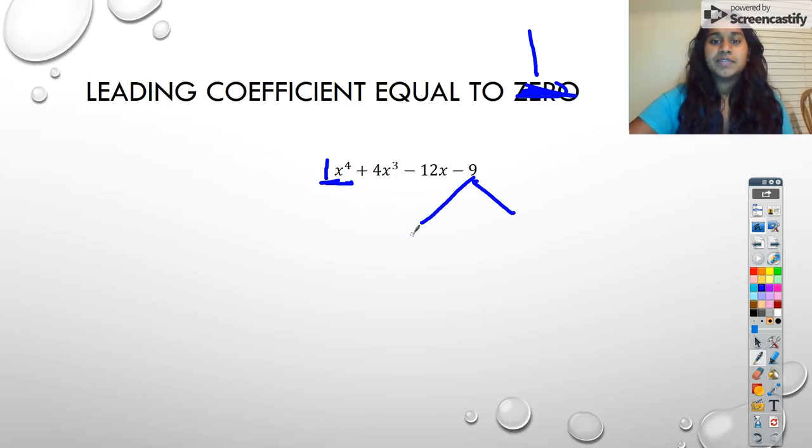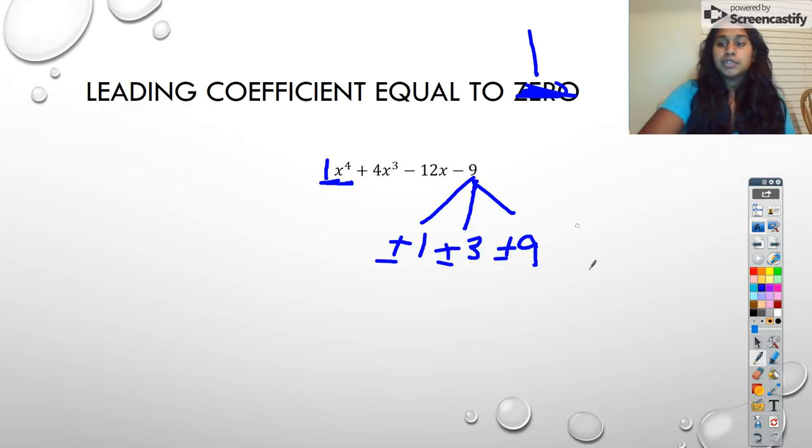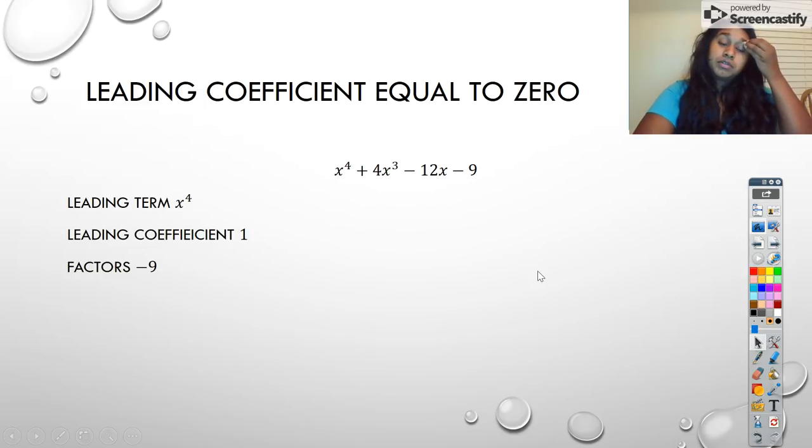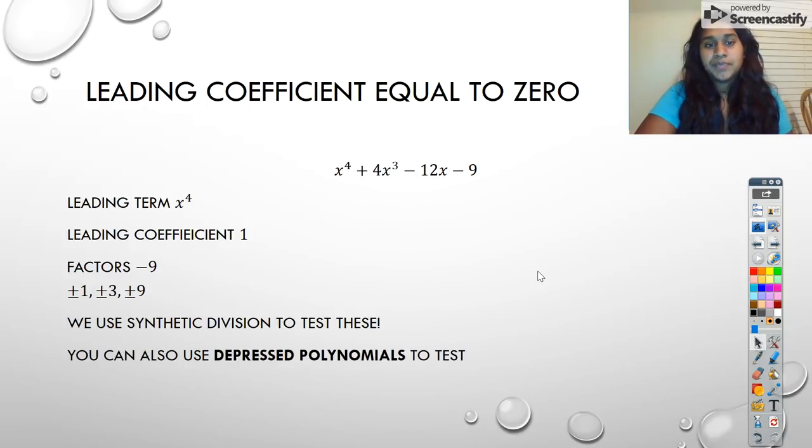So then I look at my factors of 9. Factors of 9 are plus and minus 1, plus and minus 3, and plus and minus 9. Those are literally just what times what gets me 9. So I can plug that information into synthetic substitution, synthetic division to test.